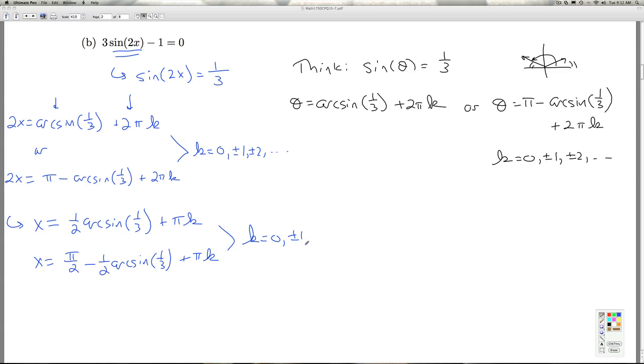Or, k is 0 plus or minus 1 plus or minus 2 and so on. So we've solved the equation. Now we want to figure out which of these guys is going to lie between 0 and 2 pi. Now, as we mentioned before, there are two solutions to this equation between 0 and 2 pi. And since the angular frequency here is 2, we expect double that, or four solutions, just like we did in the previous example.